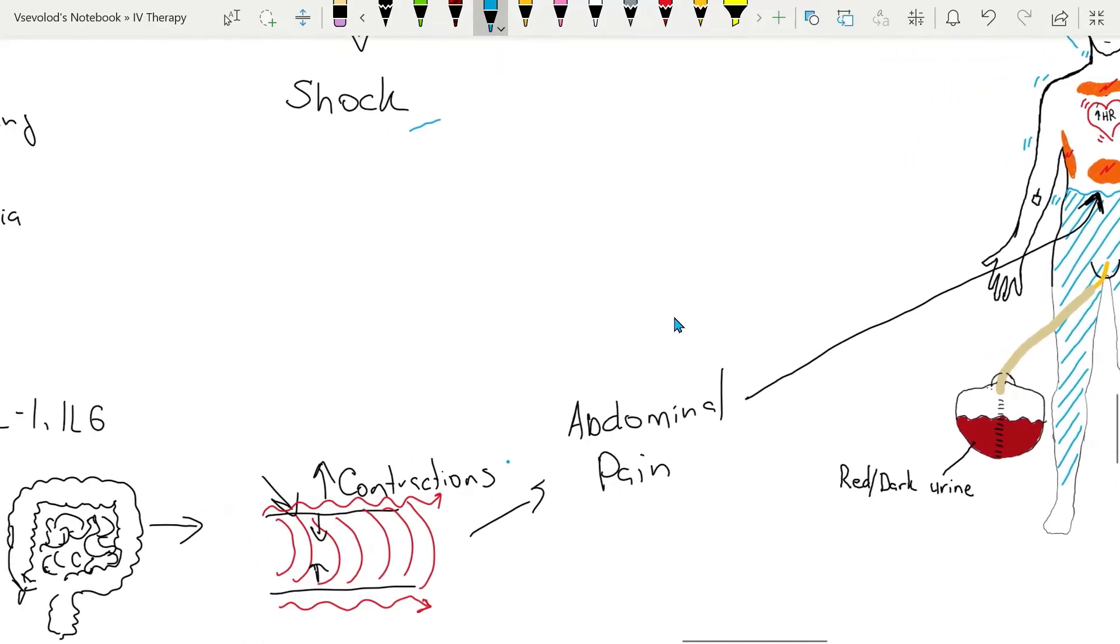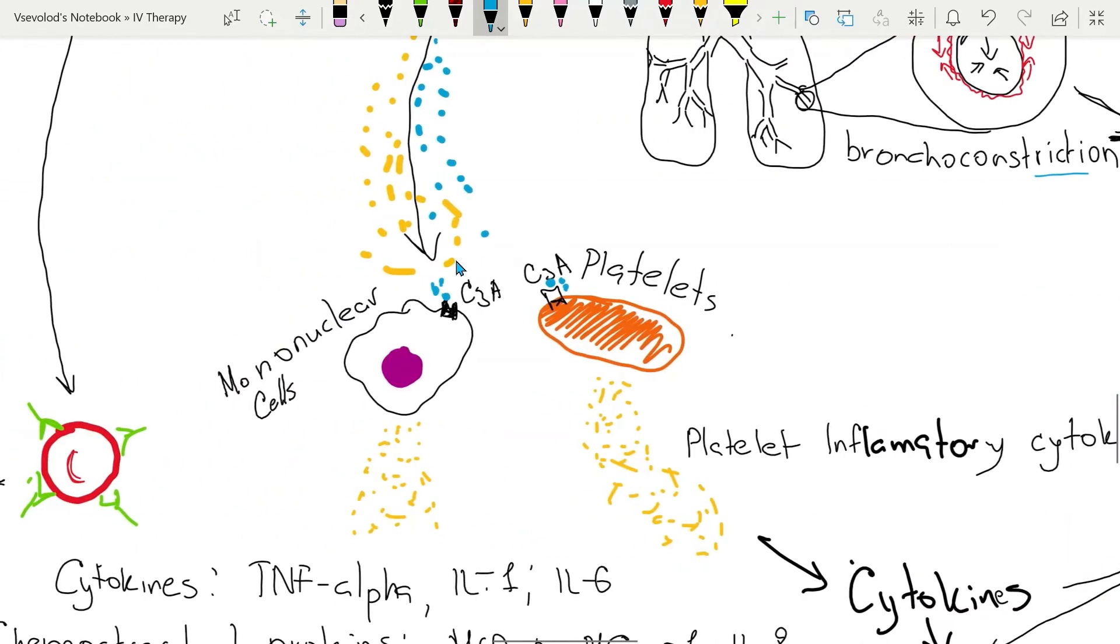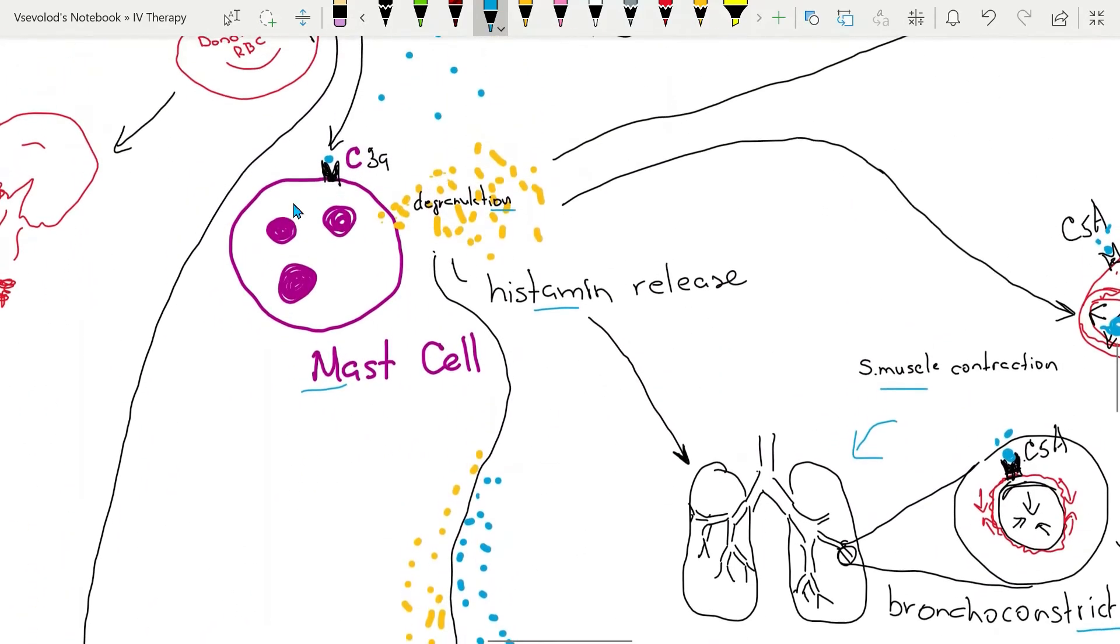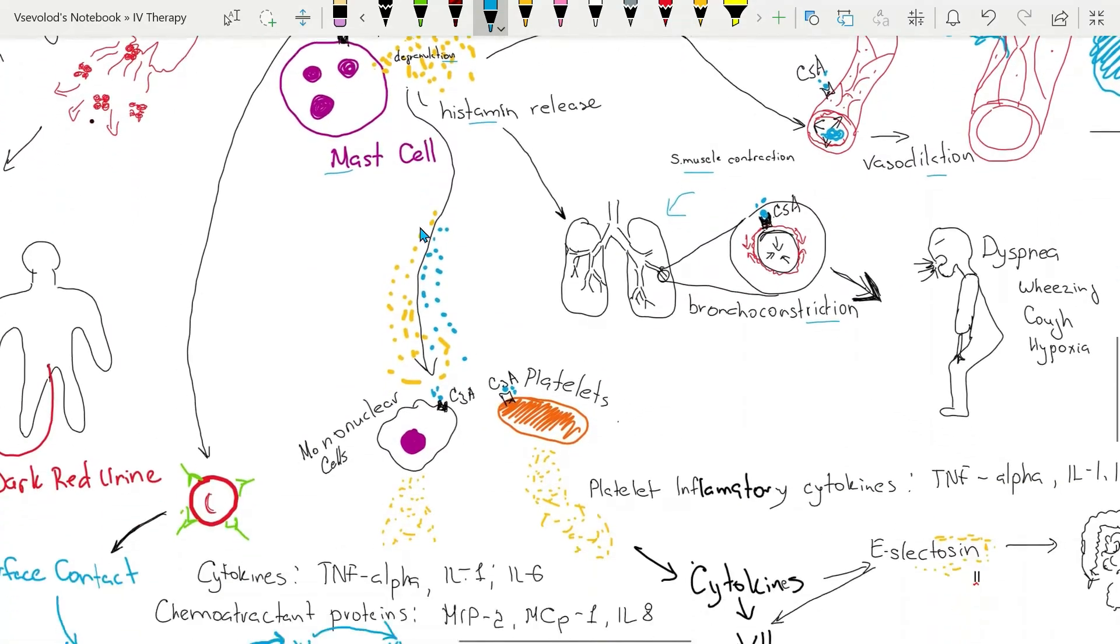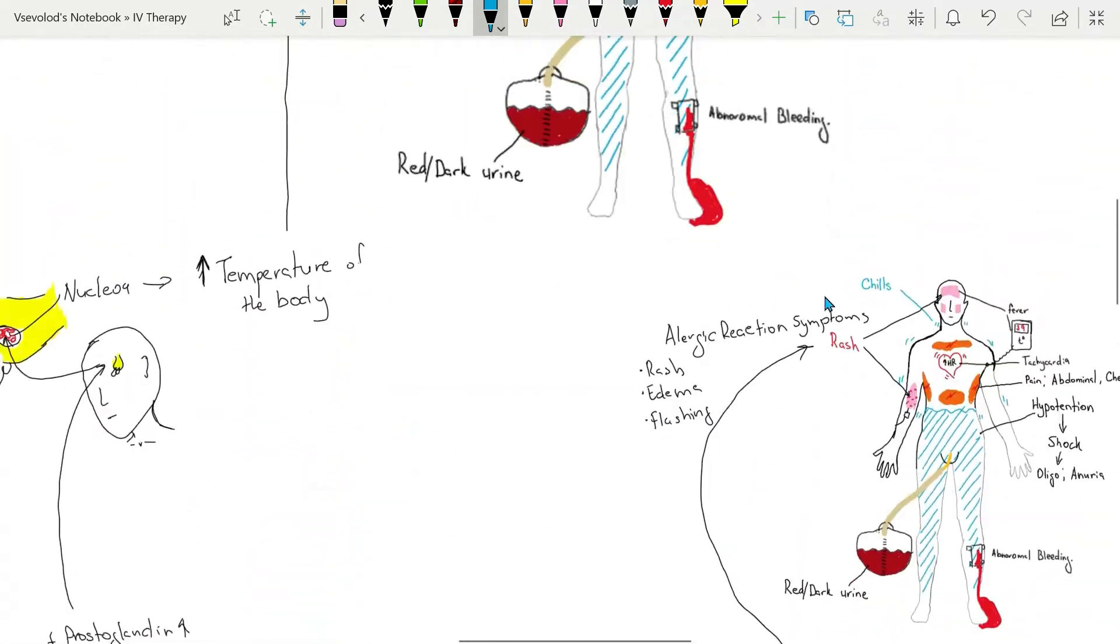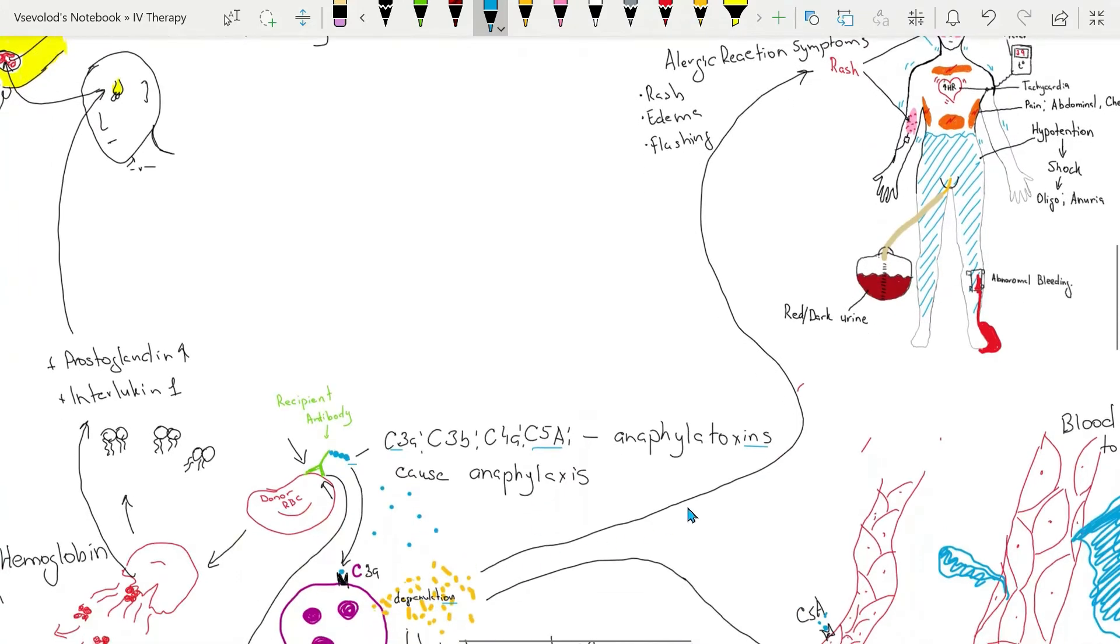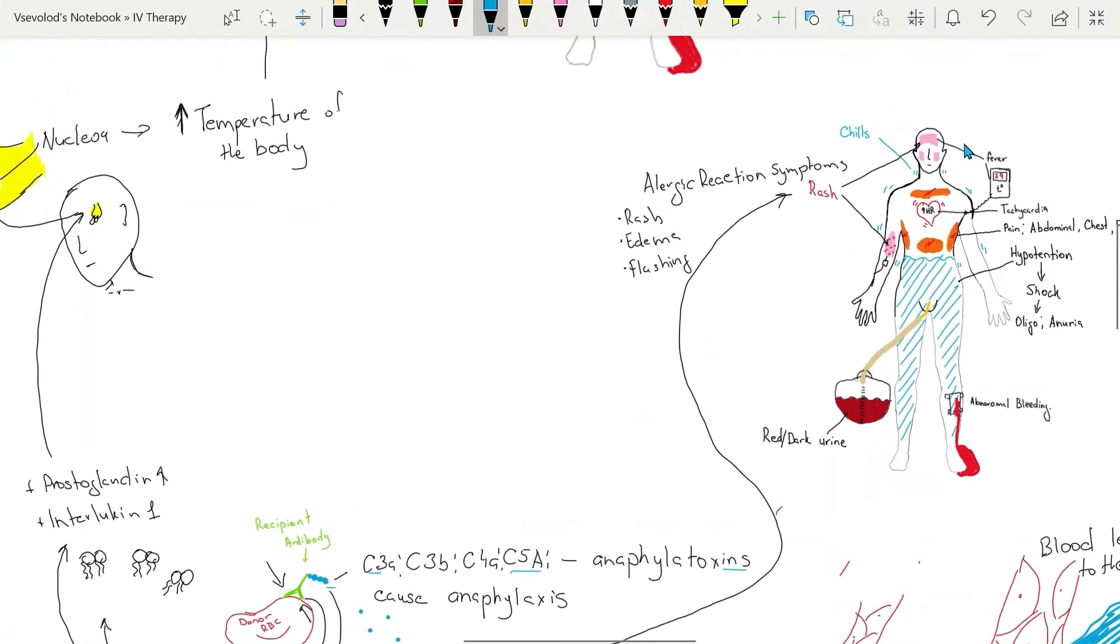Mast cells release histamine, which will travel to the tissues and cause allergic type reactions such as rash, edema, and flushing.